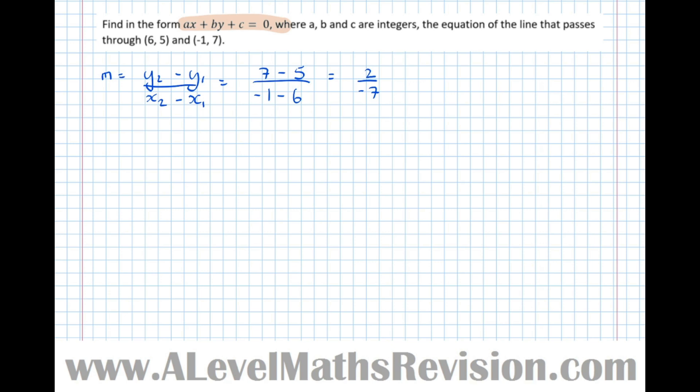Now let's take a point on the line. We'll get the same answer if we use either point. I'm going to try and avoid negative numbers and use this point here. So here we've got x1, y1. The point we're going to use is 6, 5. The gradient was 2 over minus 7, or we can call that minus 2 sevenths.